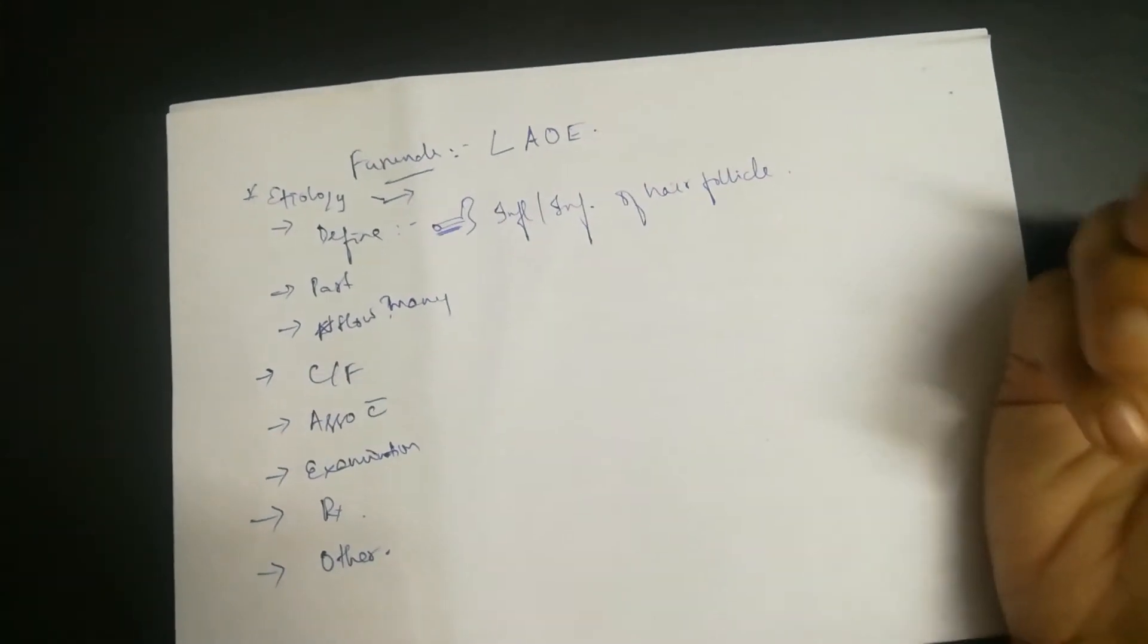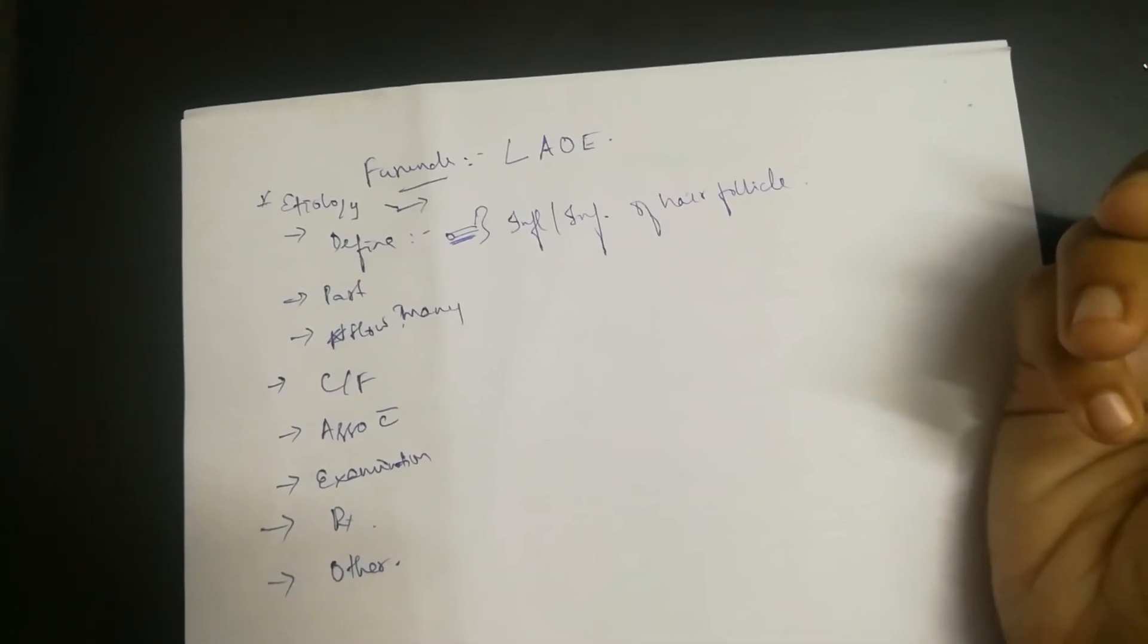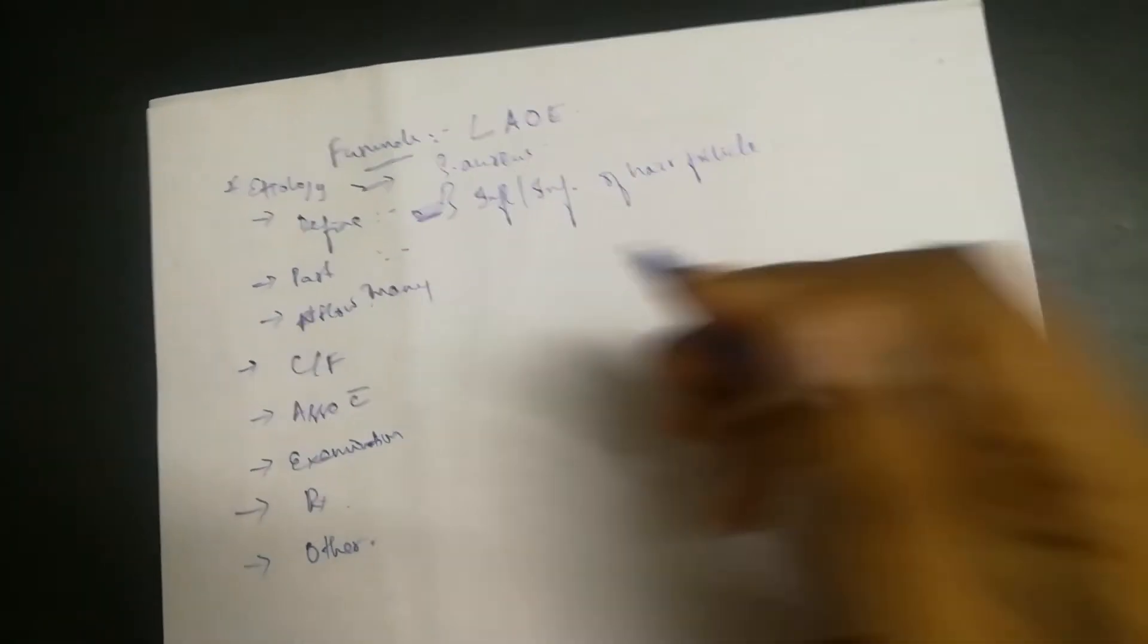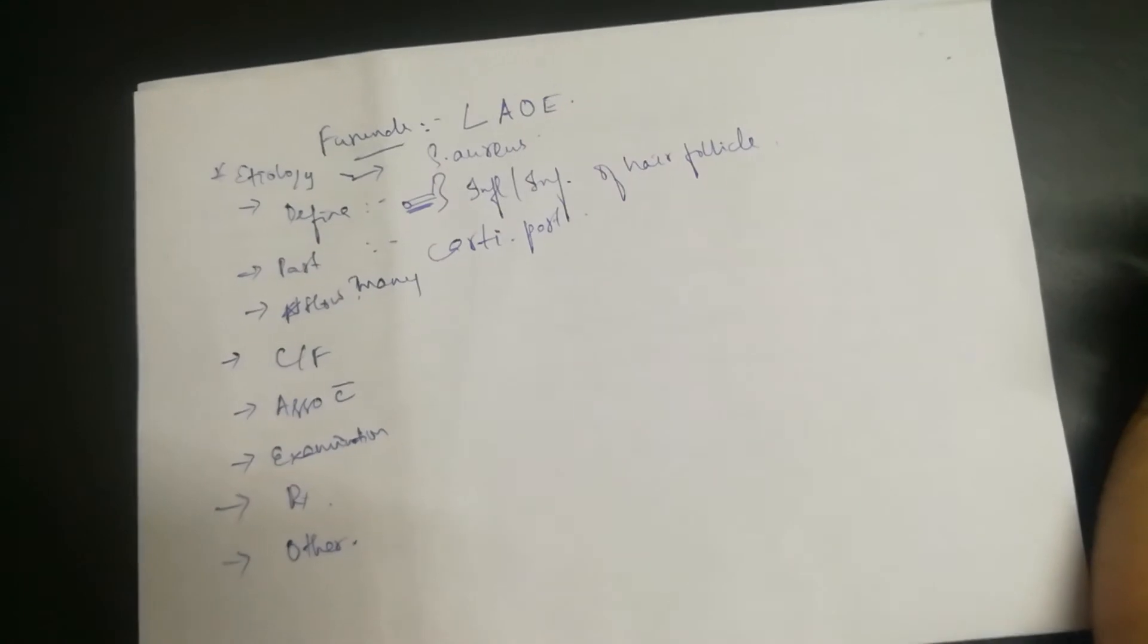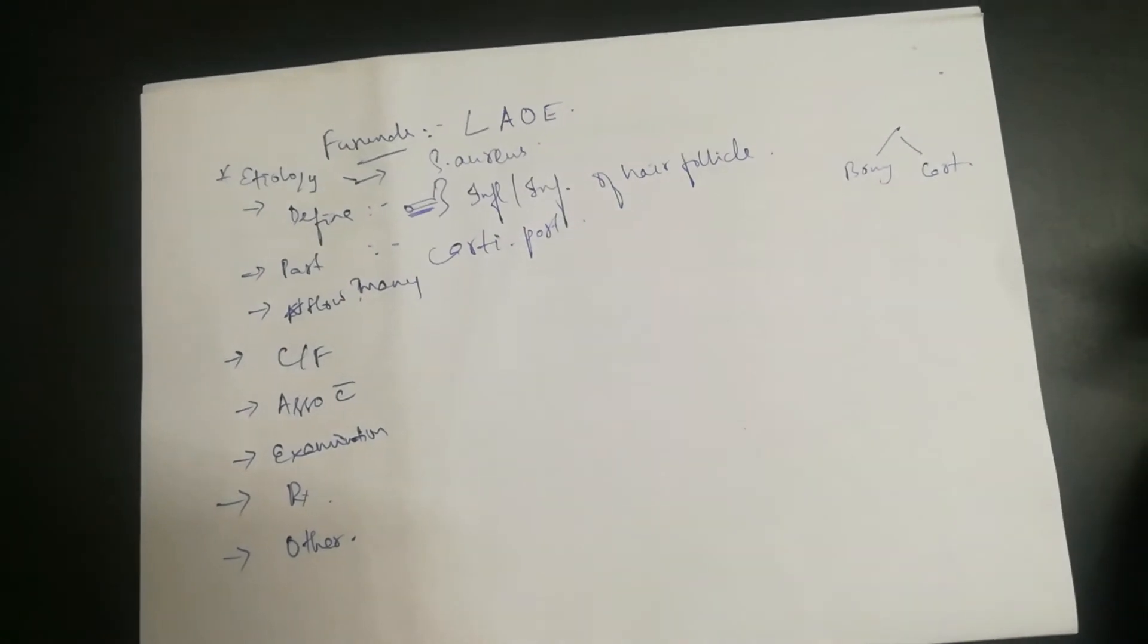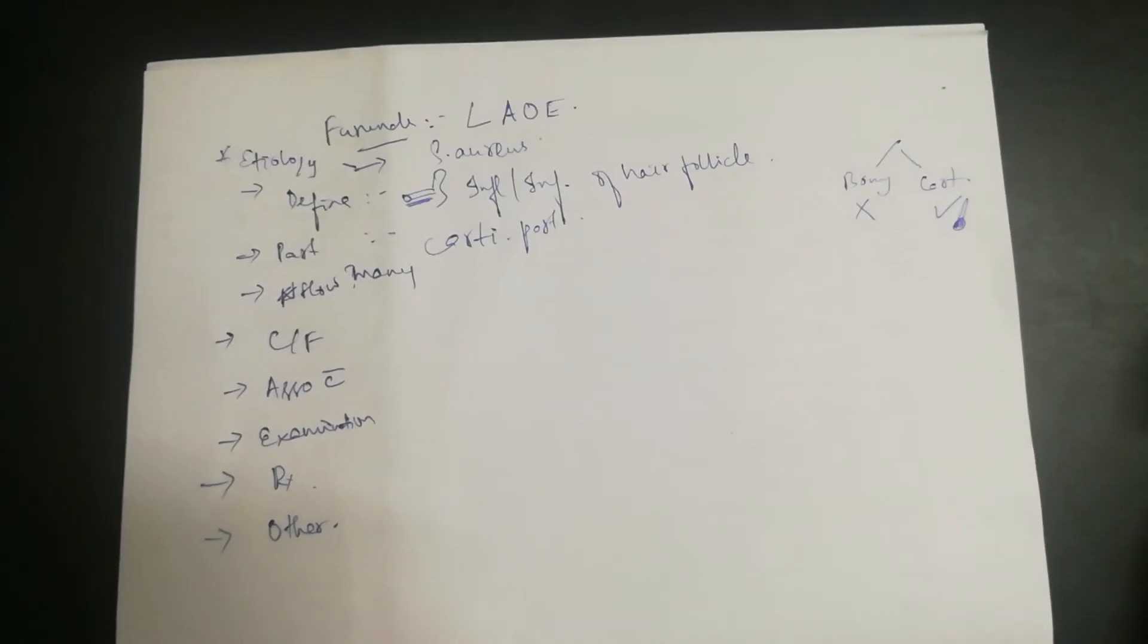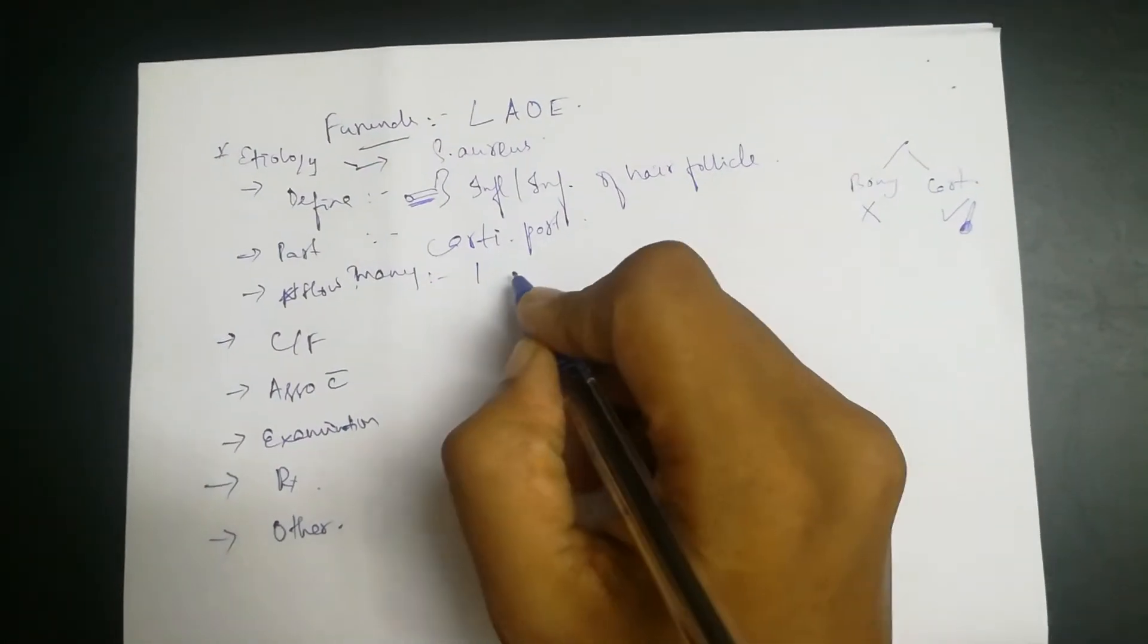It can occur in any hair follicle, but since only the cartilaginous part of the external auditory canal has hair, that's where it occurs. The etiology is Staphylococcus aureus. The external auditory canal has two parts: the bony part with no hair follicles, and the cartilaginous part with hair follicles. Usually it's single, but sometimes more than one can occur.